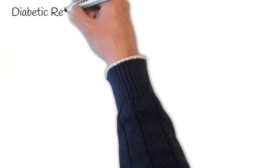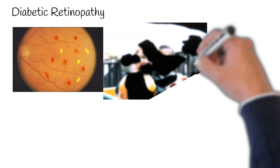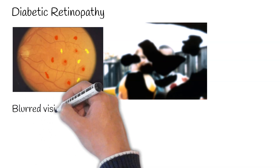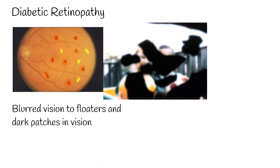Diabetic retinopathy affects around 140 million diabetics worldwide. Sustained elevated blood sugar levels cause irreversible damage to retinal vessels. Symptoms range from blurred vision to floaters and dark patches in vision. Timely diagnosis and rigorous glucose management are instrumental in averting irreversible vision loss.